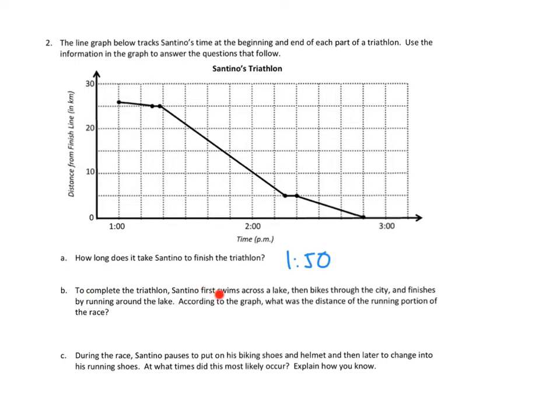Let's take a look at problem number 2B. To complete the triathlon, Santino first swims across a lake, then bikes through the city, and finishes by running around the lake. According to the graph, what was the distance of the running portion of the race? So it's a triathlon. That suggests it's 3. So first it's swimming, then biking, and then running. And we're supposed to figure out what was the running portion. So do I see the 3 activities up here? They're not really labeled, but you know what? I'm noticing something. They said he did swimming first, so I wonder if that's the swimming portion. And then I wonder if he must pause for a second. And then there's the biking portion. He gets much closer to the finish line much more quickly. And then there must be some kind of a break, and then the last part is running.